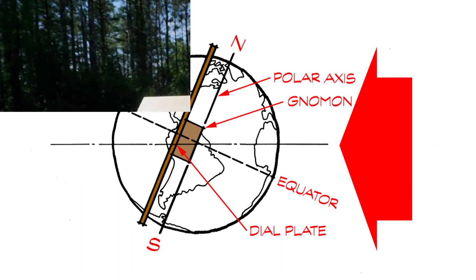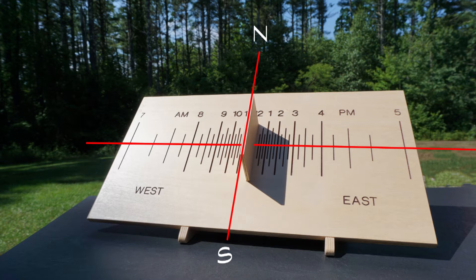An installed dial has its gnomon aligned along the north-south meridian, geographic north, and the body of the dial will be set along the east-west axis.